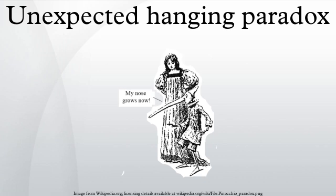Description of the paradox: A judge tells a condemned prisoner that he will be hanged at noon on one weekday in the following week but that the execution will be a surprise to the prisoner. He will not know the day of the hanging until the executioner knocks on his cell door at noon that day.